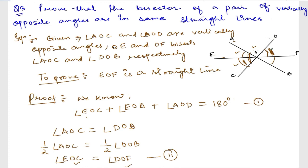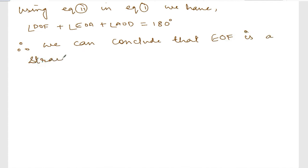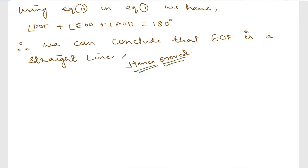If you look here: angle DOF, angle EOA, and angle AOD together are 180 degrees. Since these three angles make 180 degrees, EOF is a straight line. Therefore, we can conclude that EOF is a straight line, and hence proved. I hope the answer is correct — check it out and let me know. Thank you so much, we will meet in the next video.